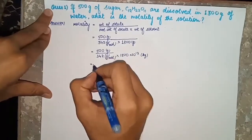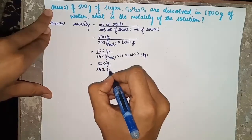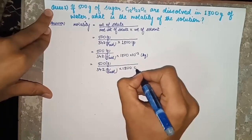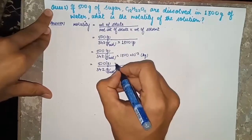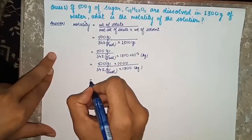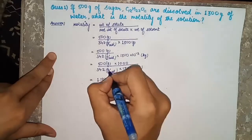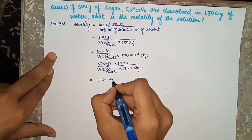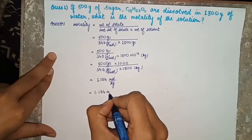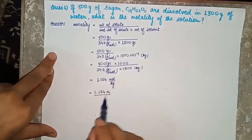You can convert grams into kilograms by multiplying by 10 raised to minus 3. So: 500 grams divided by 342 grams per mole, multiplied by 1300 times 10 raised to minus 3 kg. The 10 raised to minus 3 goes to the numerator as one thousand. Solving this, you get the answer as 1.124 moles per kg, or 1.124 molal (small m).